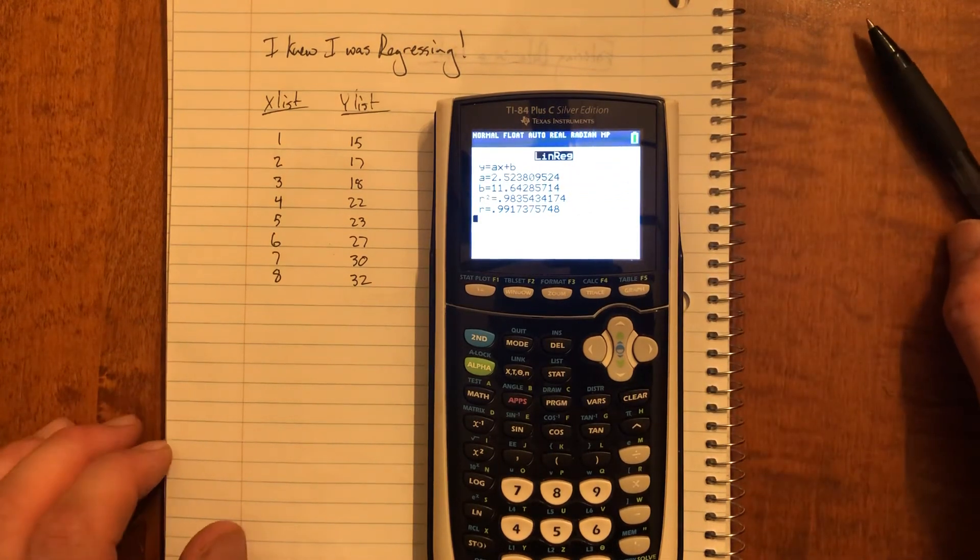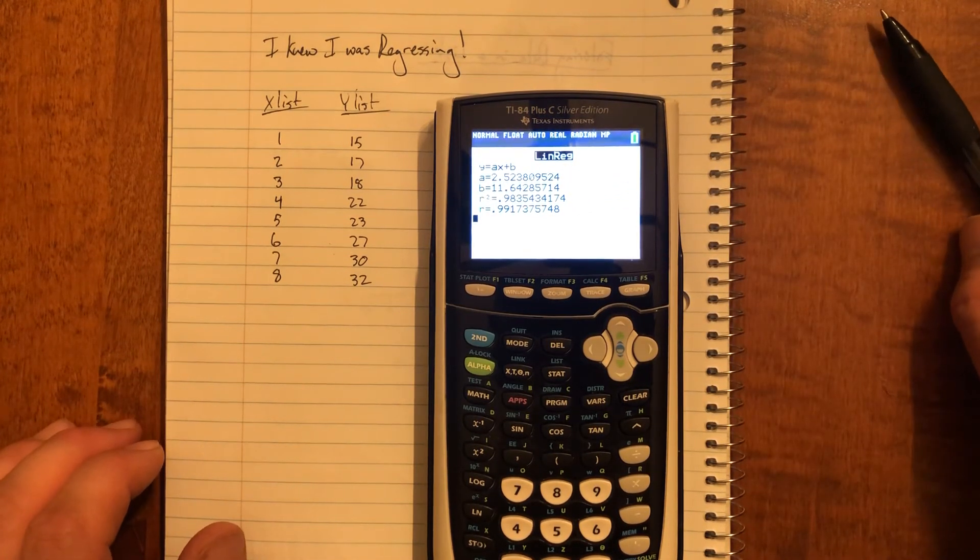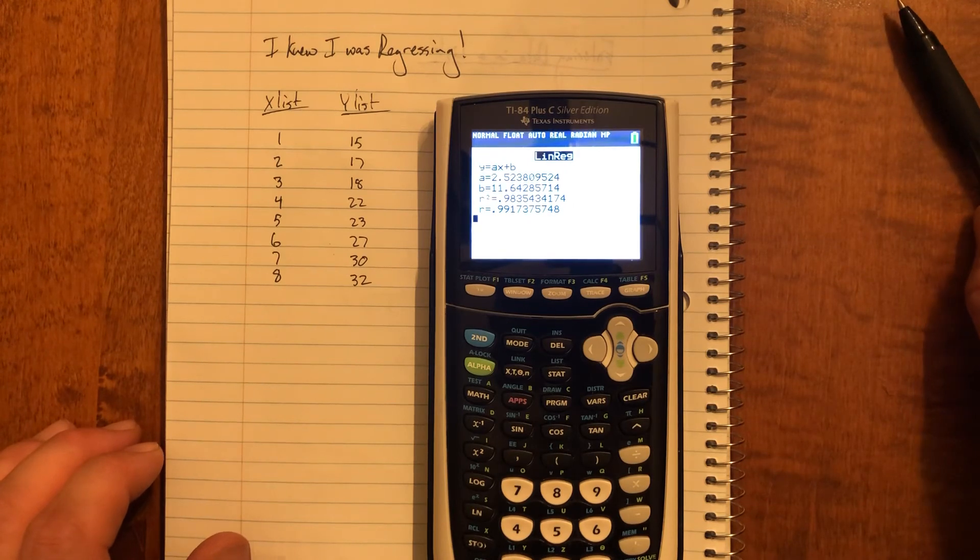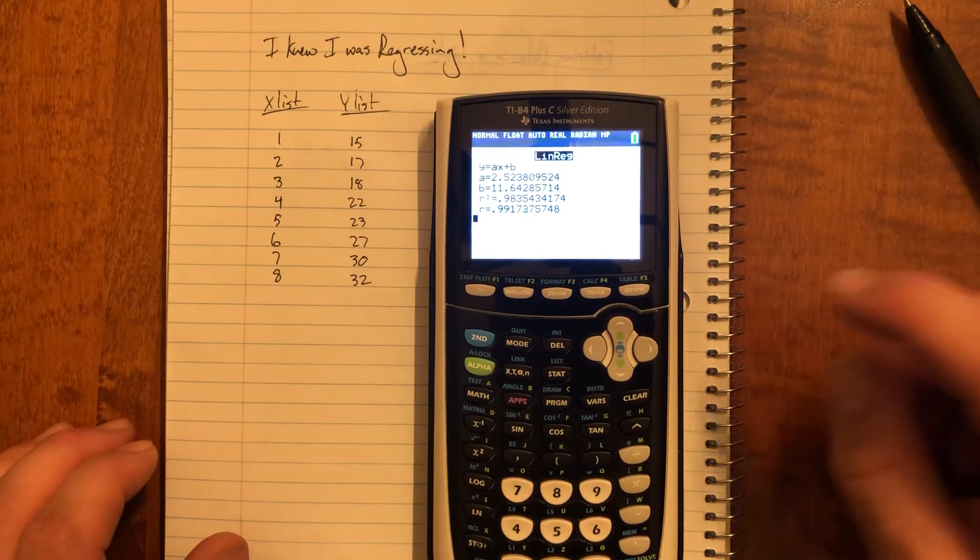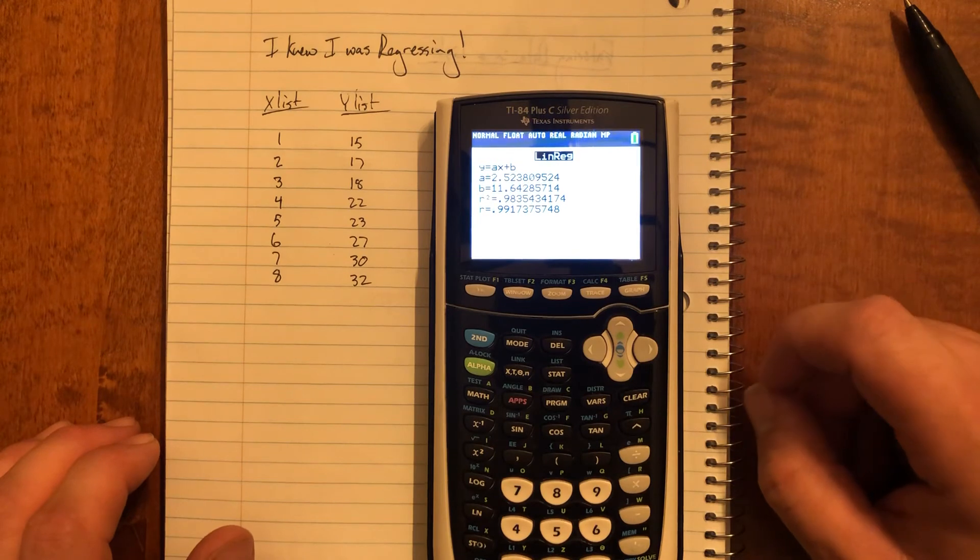So this is a really good slope, which means when I draw my line of best fit, it's going to show up quite nicely. Now, to get my line of best fit to show up quite nicely, remember I stored it in y1.